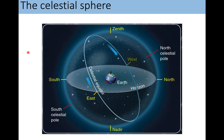Here we have our celestial sphere. You're going to learn some new vocabulary today that's important when talking about the celestial sphere and our view on Earth. Here is us standing on Earth — this shadow man. Here is Earth, and you'll notice we have the north pole and the south pole on these red lines. They line up perfectly with the north celestial pole and the south celestial pole.